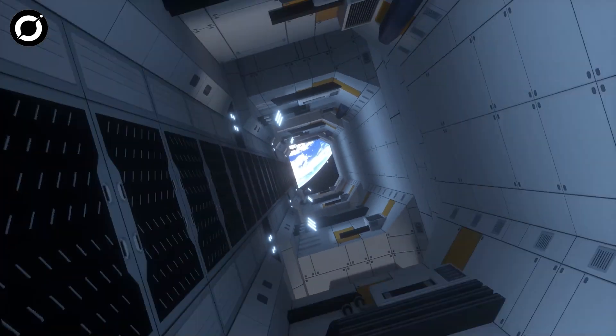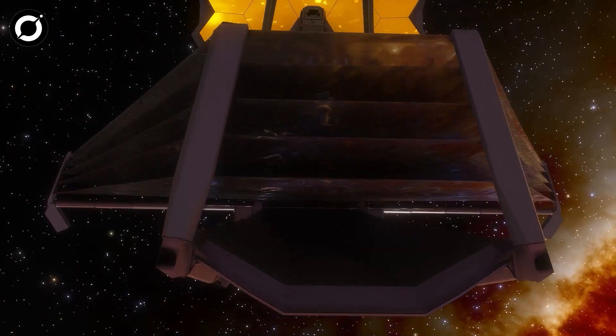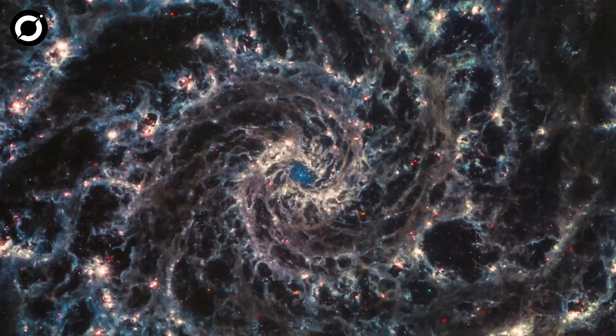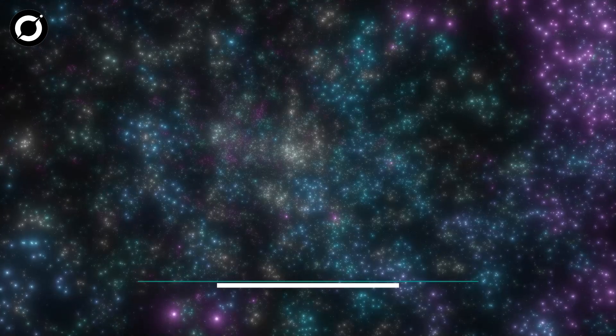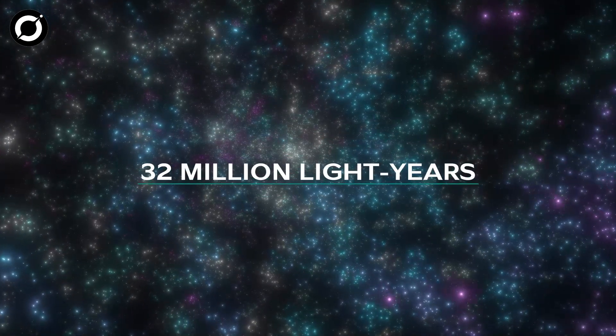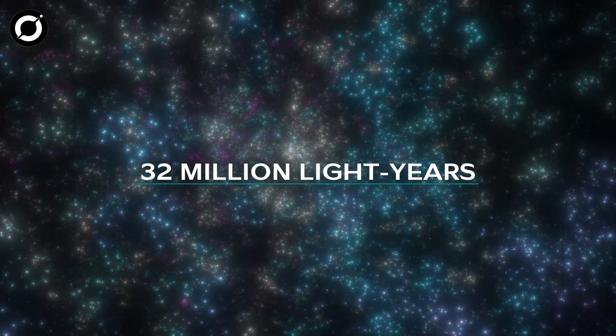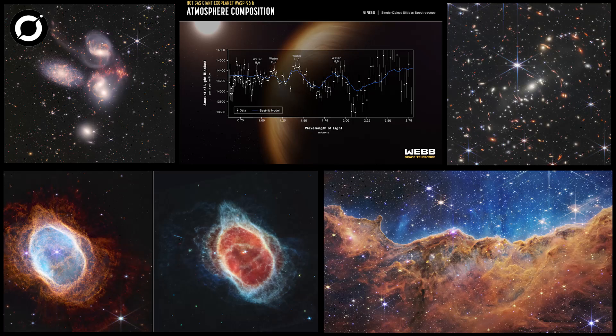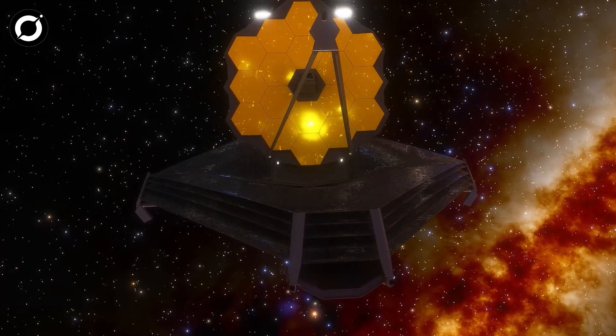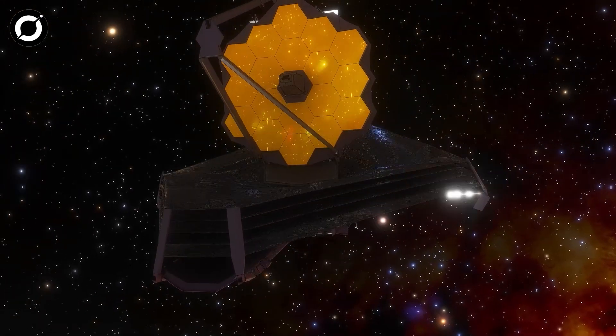The James Webb Space Telescope was recently used to observe the Phantom Galaxy, which lies about 32 million light-years away, according to NASA. New data and images have started pouring in as the world's most powerful observatory has begun its operation.